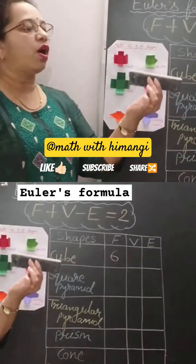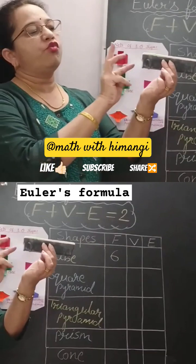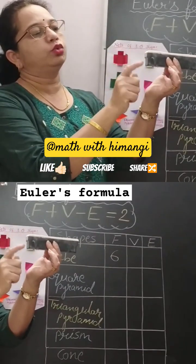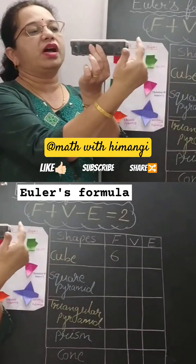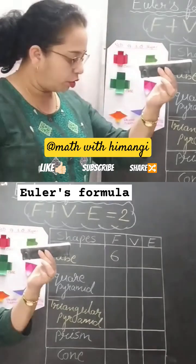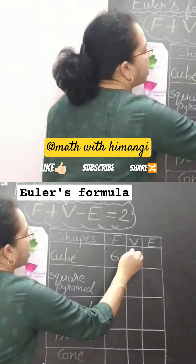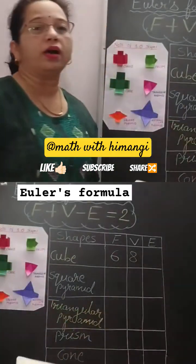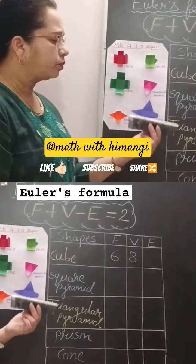Now how many vertices can you see? 4 vertices on this side: 1, 2, 3, 4, and similarly 1, 2, 3, 4 on the other side. So 4 plus 4 — we have 8 vertices in a cube, and also in a cuboid.